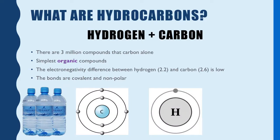What are hydrocarbons? It's a real ingenious name because hydrocarbons are made out of hydrogen and carbon. Now there are 3 million compounds that carbon can form. This type of chemistry — anything to do with carbon — is classified as organic chemistry. This is what makes organic chemistry such a large topic. The simplest organic compounds are your hydrocarbons.